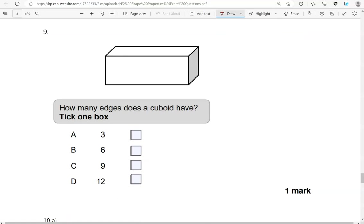How many edges does a cuboid have? Tick one box. We looked at this earlier, so it has 12.